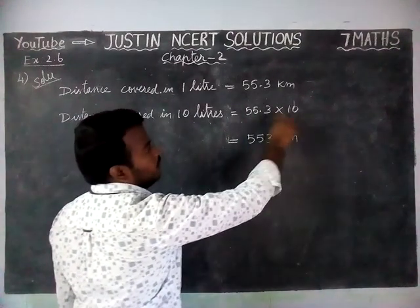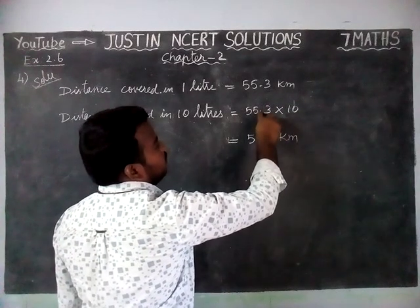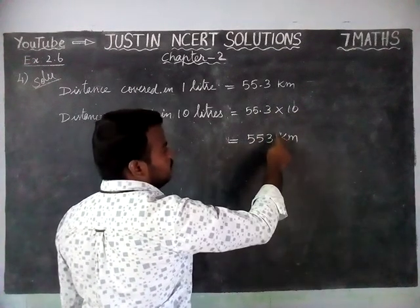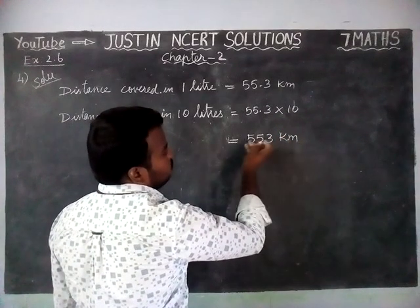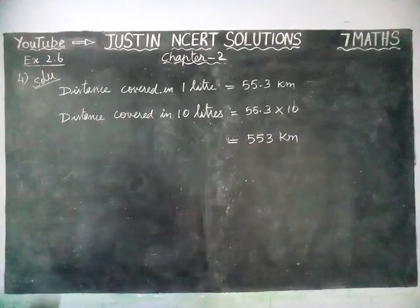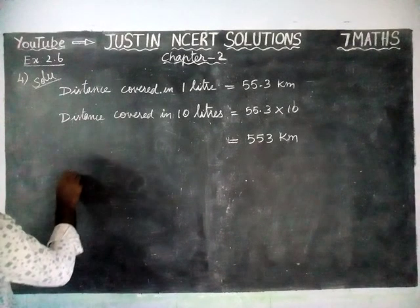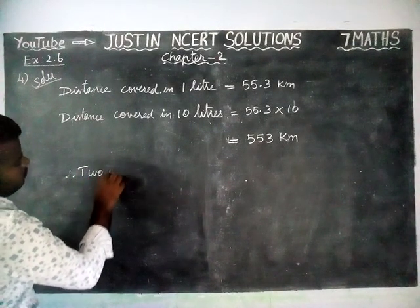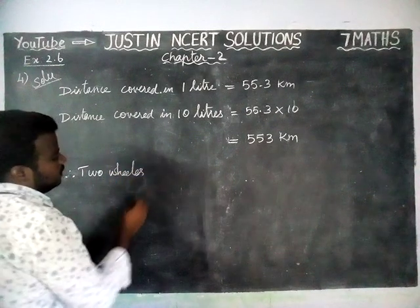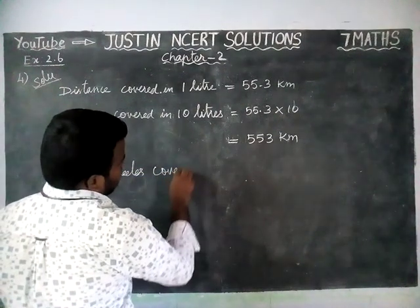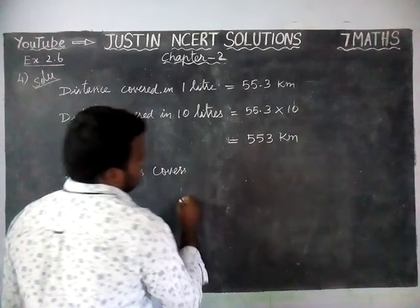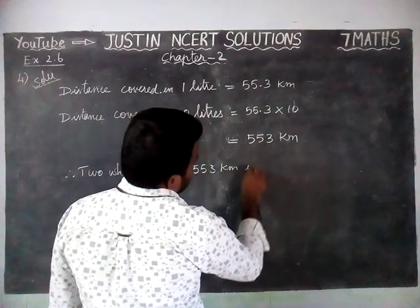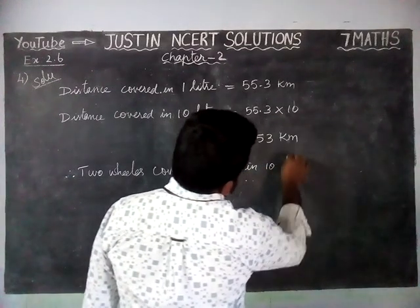Only one decimal point, only one zero, so we have taken the decimal point to the right-hand side. So 553.0 will come, and that zero has no value, so we have written 553 km. Therefore, the two-wheeler covers 553 km in 10 litres of petrol.